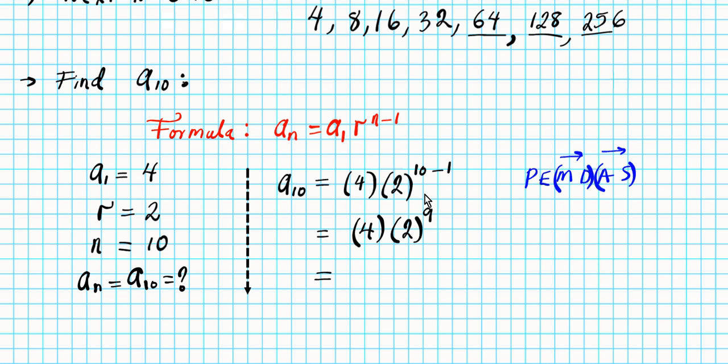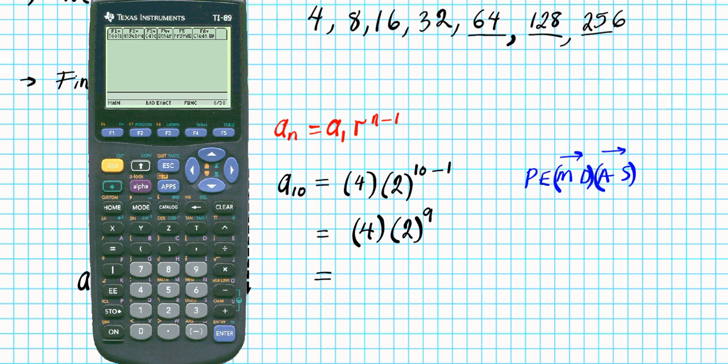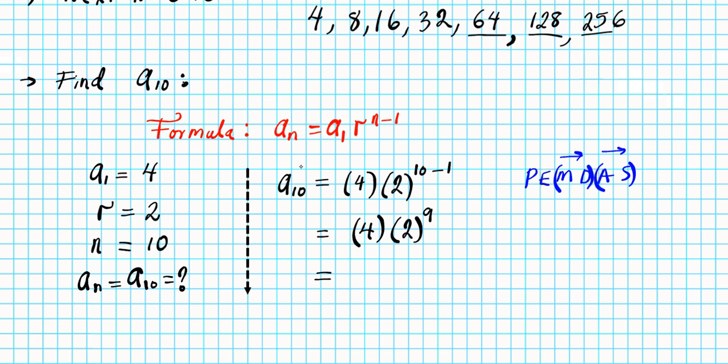But we're going to have our calculator evaluate this product for us. I'm going to be using the TI-89 to carry out the computation. So we have 4, parenthesis 2, exponentiation is you use a carat button, raised to the ninth power, and our result is 2048. So that's the tenth term of the geometric sequence. So A10 is 2048.